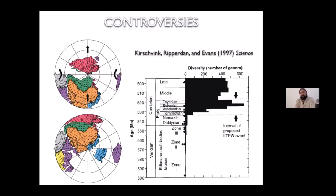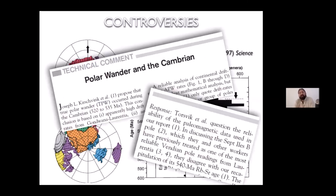Also in Science, Joe Kirschvink and David Evans showed that paleomagnetic data from Laurentia and much of Gondwana seem to show about a 90-degree shift in the location of the paleomagnetic poles. Interestingly, that shift seems to be occurring right around the time of the Cambrian explosion — again, not without controversy. Tron Torsvik, Joe Meert, and others argued about data quality and data selection, and there was a very public back and forth about this event.